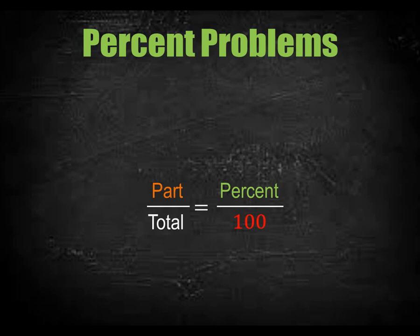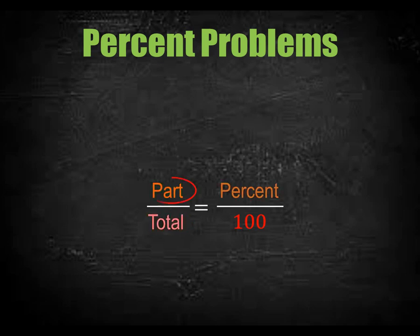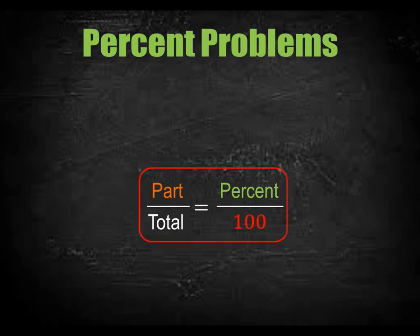When percent problems are discussed, three cases are possible. Case 1: percent is to be found, part and total are given. Case 2: total is to be found, part and percent are given. Case 3: part is to be found, total and percent are given. The good news is that this single equation is used to solve all of them — just put the given values into the equation and solve for the unknown.